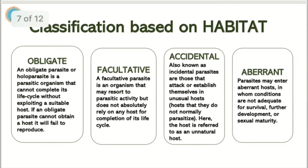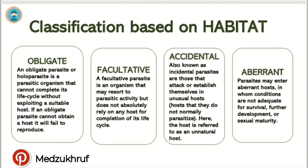Classification of parasites based on habitat: An Obligate parasite, also called a holoparasite, is a parasitic organism that cannot complete its life cycle without exploiting a suitable host. If an obligate parasite cannot obtain a host, it will fail to reproduce. A Facultative parasite is an organism that may resort to parasitic activity but does not absolutely rely on any host for completion of its life cycle. An Accidental parasite, also known as an incidental parasite, is an organism that establishes itself in an unusual host — the host where it normally does not parasitize. Here the host is referred to as an unnatural host.